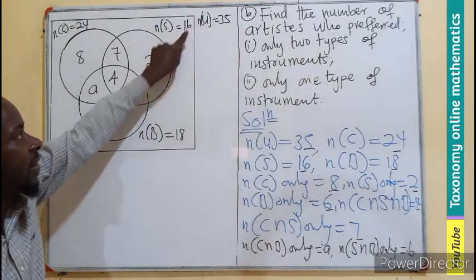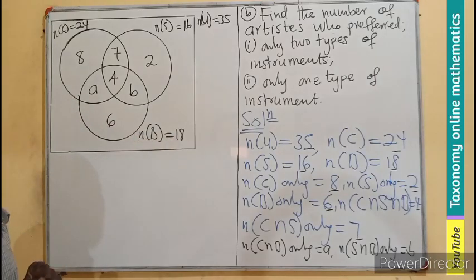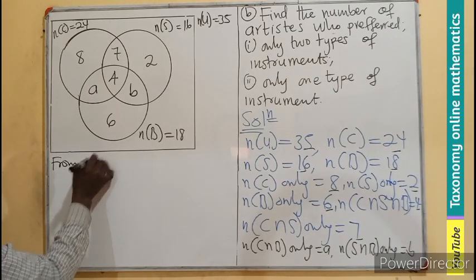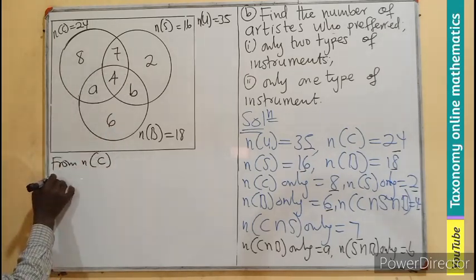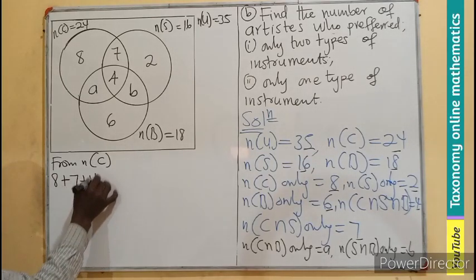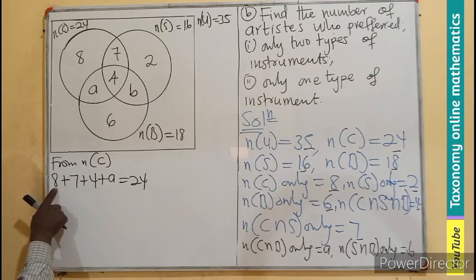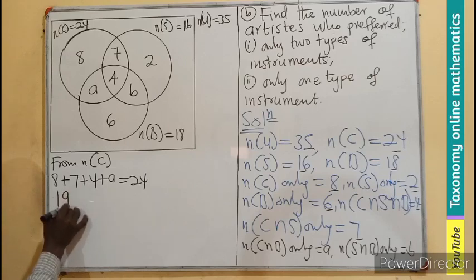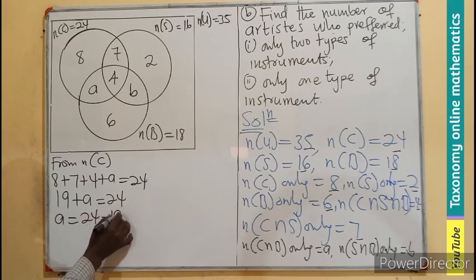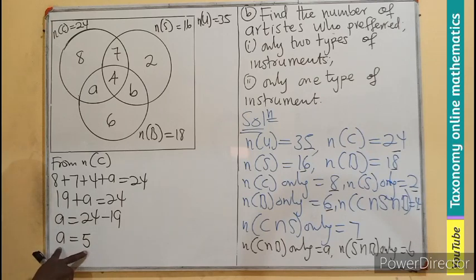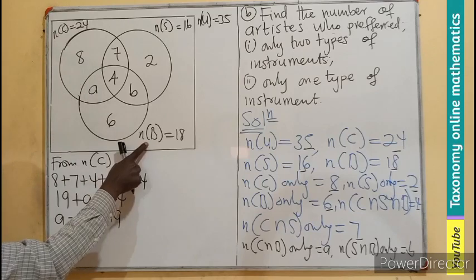All four regions inside the cymbal circle must sum to 24. So: 8 + 7 + 4 + a = 24. That gives 19 + a = 24, so a = 24 − 19 = 5. Therefore, the number of artists who play both cymbal and bongo only is 5.